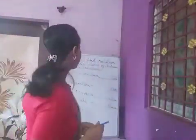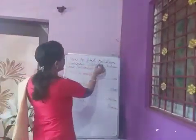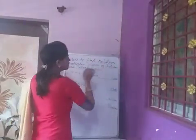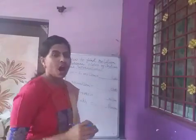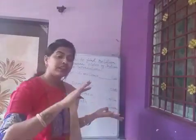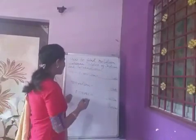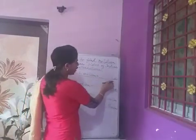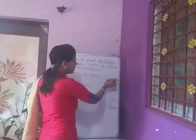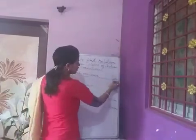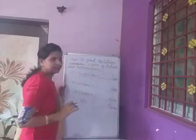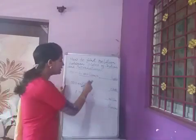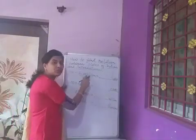Our next topic is: how to find the relation between places of the Indian and international system of numeration. How will you find the relation between the different places? For example, 1 million is equal to how many lakh? You have to fill in here. So first, for this, you have to write 1 million into digits.